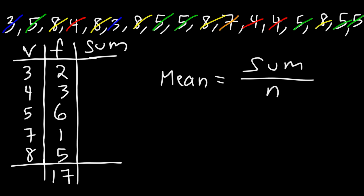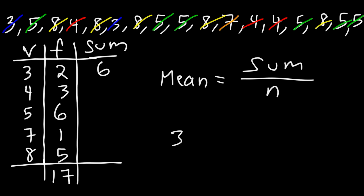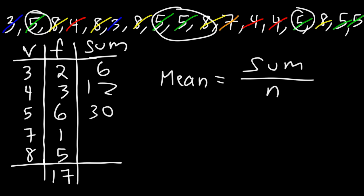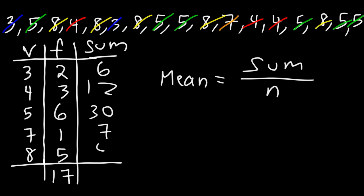Now let's calculate the sum. We can multiply the value by the frequency. So 3 times 2 is 6 — we had 2 threes, so we're basically summing those. 4 times 3 is 12, giving us the sum of those 3 fours. Then 5 times 6 is 30 — that's the sum of the six 5s. 7 times 1 is 7. 8 times 5 is 40. Now let's add up all the numbers in that column: 6 plus 12 is 18, plus 30 is 48, plus 7 is 55, plus 40 gives us 95.